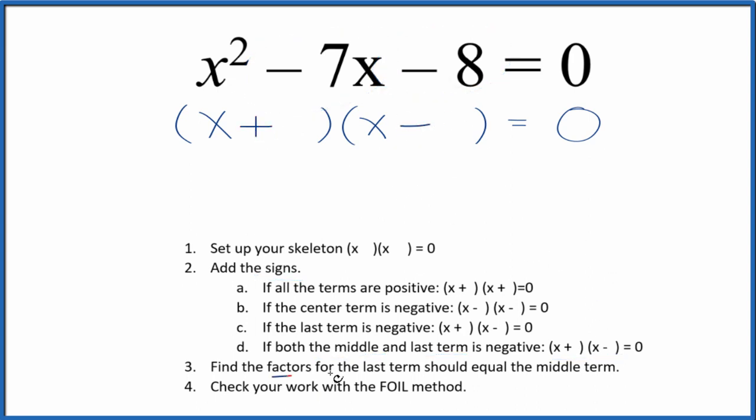Next, we want to find the factors for the last term. That's the negative 8. And they should add up to the middle term, negative 7.